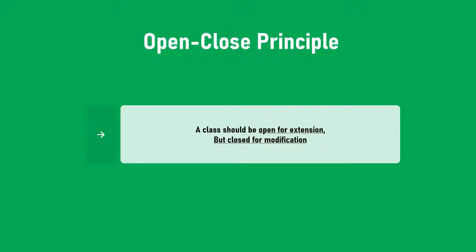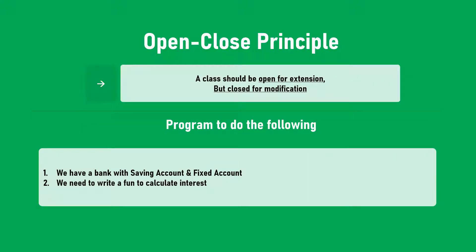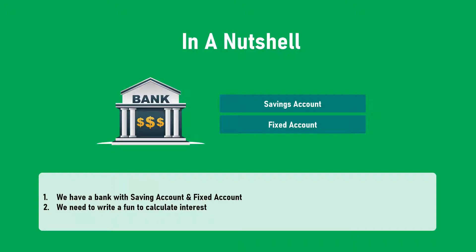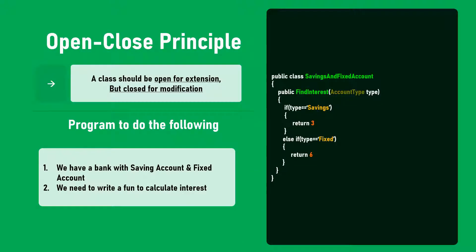Now let's look at the second principle: Open-Close Principle. It states that a class should be open for extension but closed for modification. Let's understand that. Imagine we have a bank that has a savings account and a fixed account, and we need to write a function to calculate the interest.